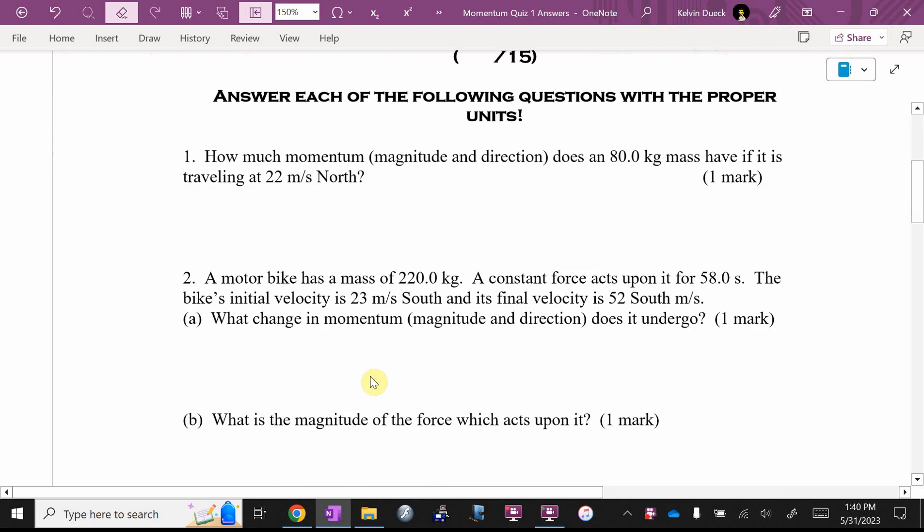Number one, one mark, straight plug and chug. How much momentum, magnitude and direction? Momentum is not impulse. Impulse is change in momentum. Momentum is just plain old mass times velocity. The mass is 80, the velocity is 22. 80 times 22 is going to be what, Mr. Newick? 1,600 plus 1,760. There's the magnitude. What are the units for momentum? It's mass times velocity - kilogram meters per second. Oh, but they also wanted the direction. Got to be north because that's the direction of velocity. You could also write Newton seconds because a Newton second simplifies to a kilogram meters per second.